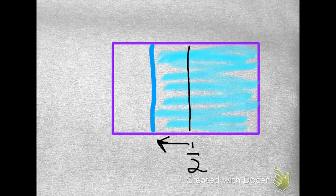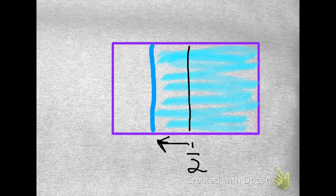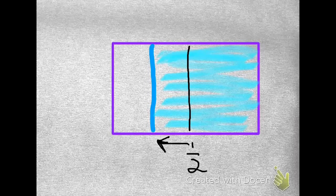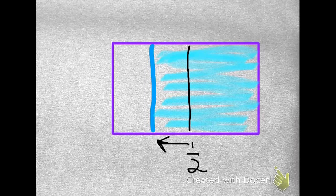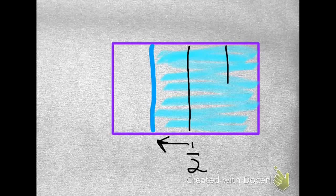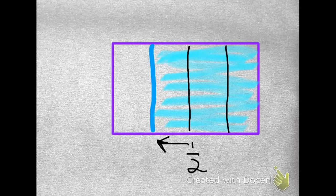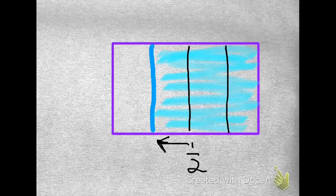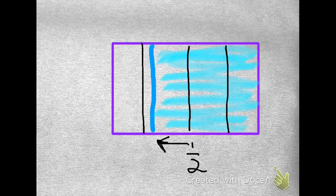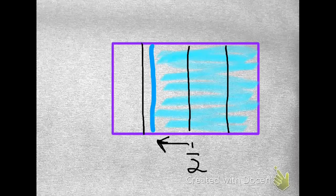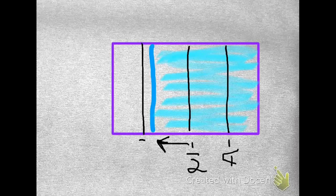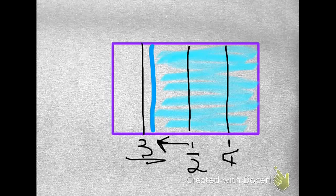So what if I divided this candy bar into four pieces? I'm going to make a line down the middle, and remember I'm just estimating so it doesn't have to be perfect. And I can see that this would be one-fourth of the candy bar, and this would be three-fourths of the candy bar.